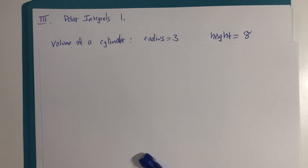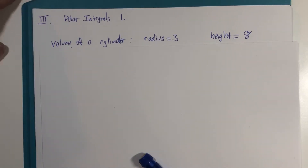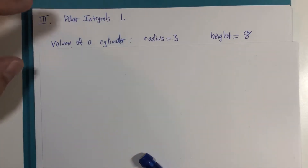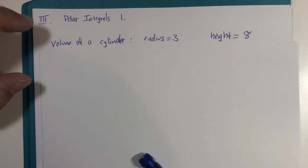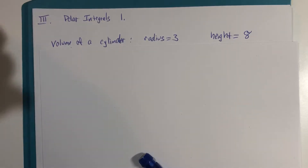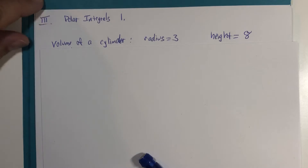Let's set up and evaluate our first actual polar integration problem. We're going to take a shape that works rather nicely with polar coordinates, so you can see the names of the pieces and the types of pieces we have to fill in. We can increase the difficulty with practice over time.